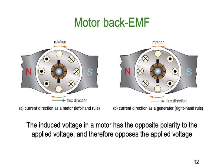DC motors also have a back EMF. As the coils rotate through the magnetic field, a secondary field is produced called the back EMF. The induced voltage in a motor has the opposite polarity to the applied voltage and therefore opposes it — this is Fleming's law, that a secondary field established by an induced current will oppose the primary field.